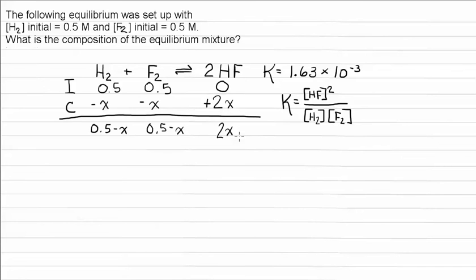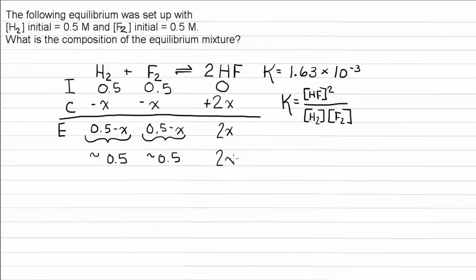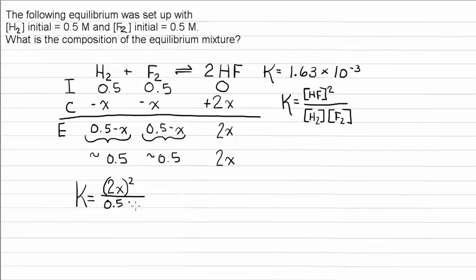Before we start plugging things into our equilibrium constant expression, we're going to make an assumption to make the math easier. The assumption is that at equilibrium, the change in x is going to be negligible. So at equilibrium, the concentration of hydrogen is approximately 0.5 molar, fluorine is approximately 0.5 molar, and HF stays at 2x. Now we plug these values into the equilibrium expression: K equals (2x) squared divided by 0.5 times 0.5.